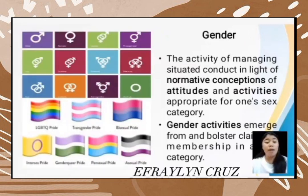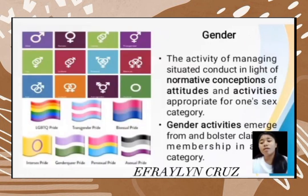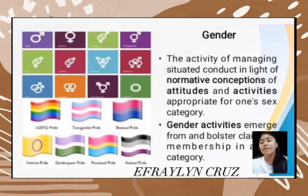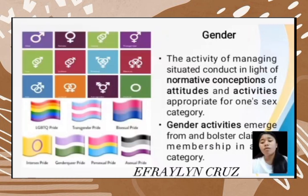The intersex pride flag is a way for the community to unite under a symbol free from gender stereotypes. Yellow has long been seen as an intersex color representing those who do not fit the binary. The purple circle represents the wholeness of the intersex community, free from colors like blue and pink that are commonly seen as male and female respectively.